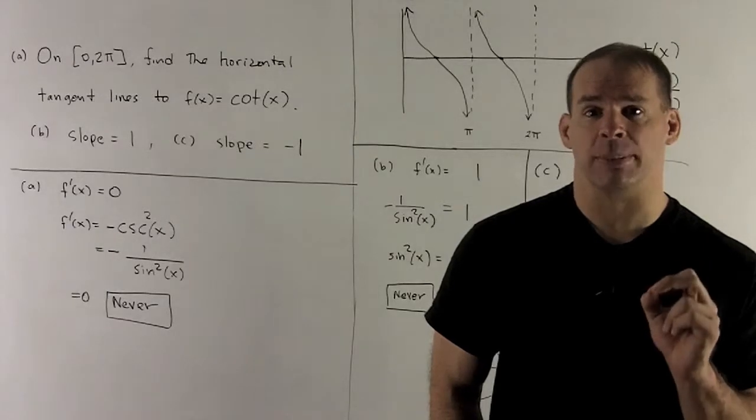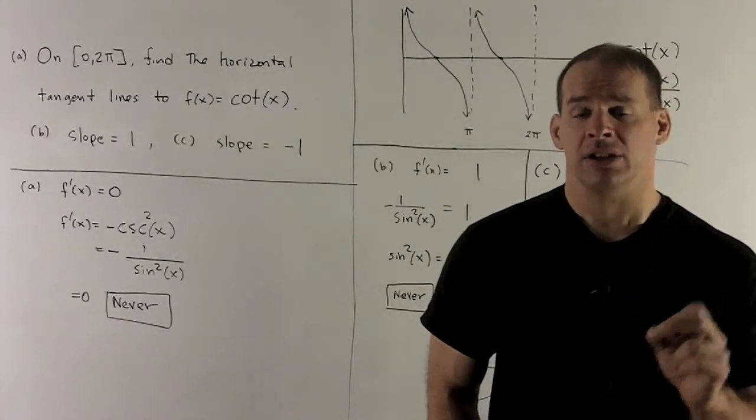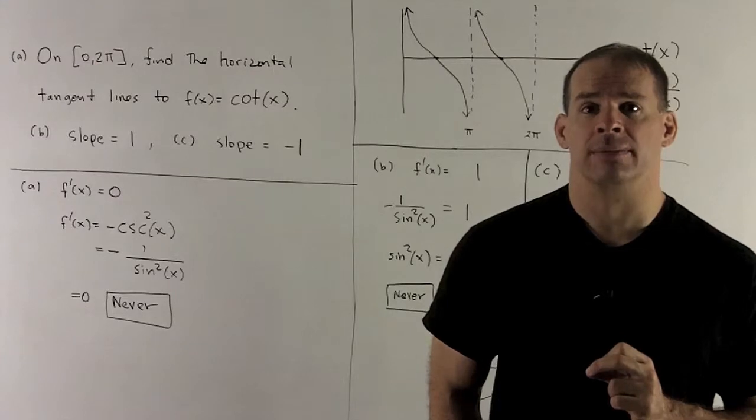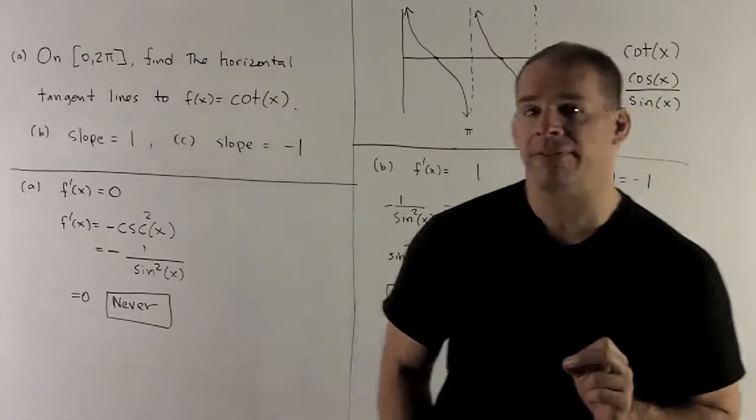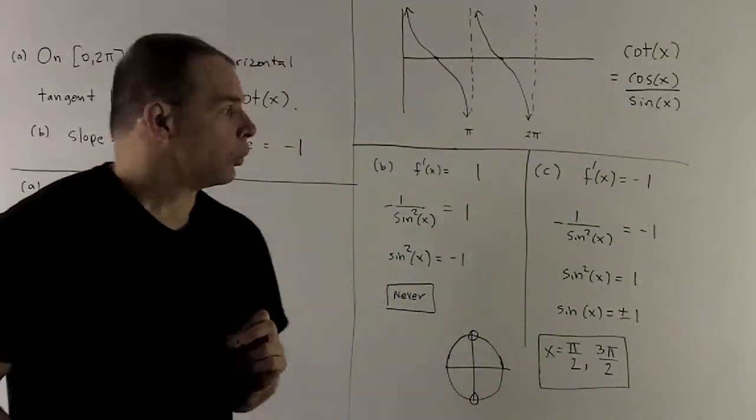So, the answer is going to be we'll never have a horizontal tangent line to the graph of cotangent of x. If I go to the graph, what do we see?